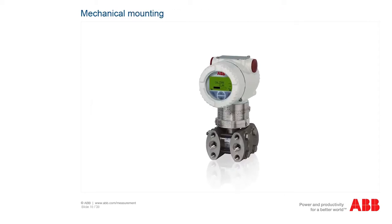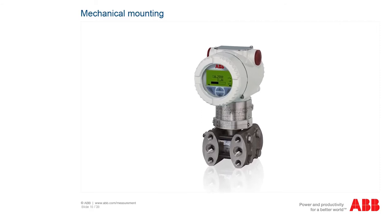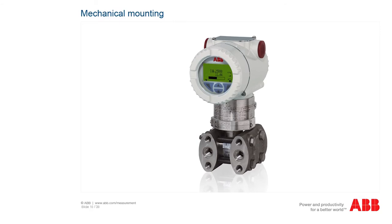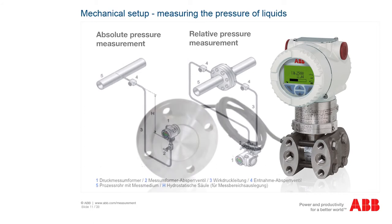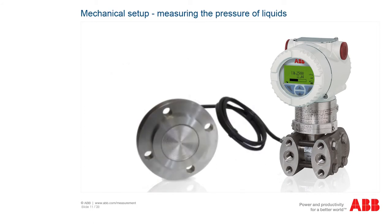Depending on how the 266 pressure transmitter is used, there are certain conditions to be observed for assembly. To measure the pressure of liquids in the process pipe, the sampling point must be located at the side of the process line. For pure liquids, the pressure transmitter must be mounted at the side of or beneath the sampling point, with the cable entry pointing downward to prevent liquid ingress. The connection leads should be provided with a drip loop if possible. For contaminated liquids, mount the pressure transmitter above the sampling point to avoid blockage, and consider using a diaphragm seal.